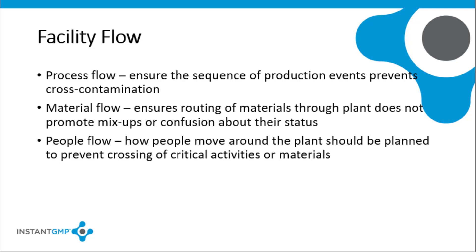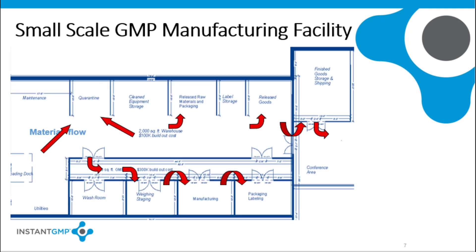People flow: a plan of the factory shows the routing taken by people when they enter the factory, when they move around from one department to another, and when they leave the factory. People should be limited to those areas where they have their activities. Production areas should not be used as passages or corridors for non-essential personnel movement.